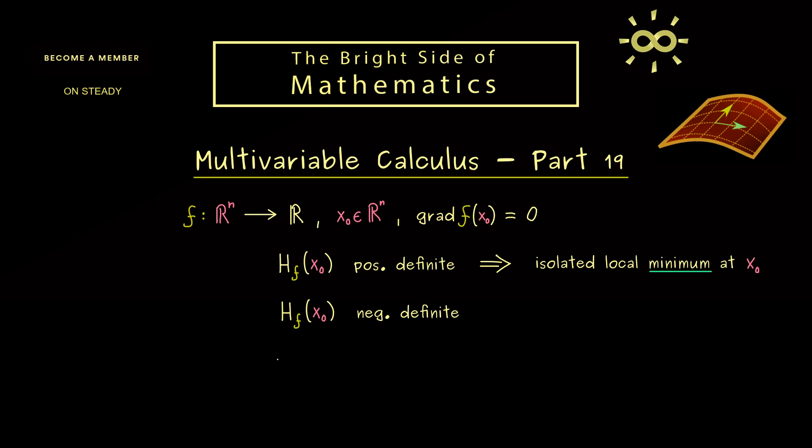On the other hand if we find a negative definite matrix we find a local maximum at x₀. So we see the Hessian, this special square matrix, in some cases can give us enough information such that it guarantees the existence of local extrema. Hence in these cases you only have to know how you can check for a positive definite or negative definite matrix.